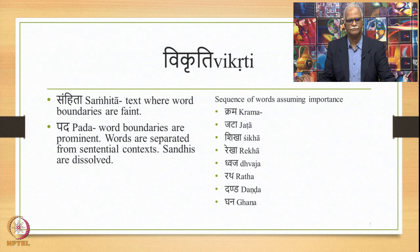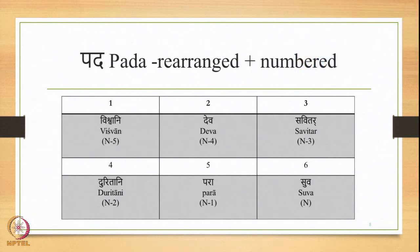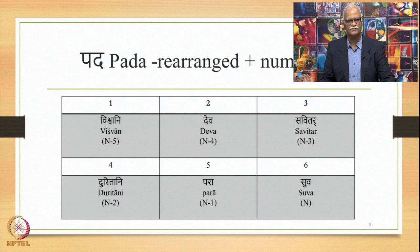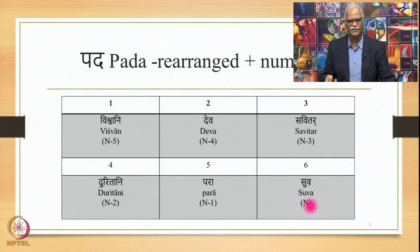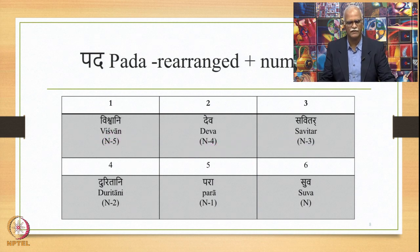If these Padas are rearranged and numbered, they will be as follows. From the sentence Vishwani, Deva, Savitar, Duritani, Para, Suva, we have: Vishwani=1, Deva=2, Savitar=3, Duritani=4, Para=5, Suva=6. The same words are also numbered from the last word: Suva=N, Para=N-1, Duritani=N-2, Savitar=N-3, Deva=N-4, Vishwani=N-5. These two numbering systems help in generating all eight Vikritis.